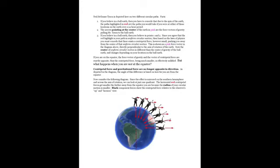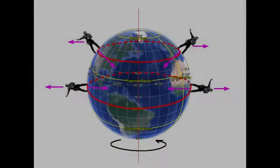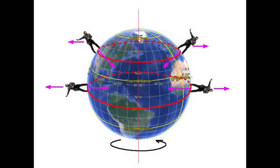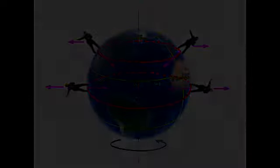If you are on the equator, the force vector of gravity and the vector of centripetal force are exactly opposite. Thus, the centripetal force, being much smaller, is effectively nullified. But what happens when you are not at the equator? Centripetal force and gravitational force are no longer opposite in direction, and that's key. Centripetal force and gravitational force are no longer opposite in direction. As depicted in the diagram, the angle of this difference is based on how far you are from the equator. Now consider the following diagram.